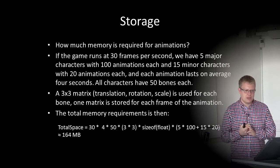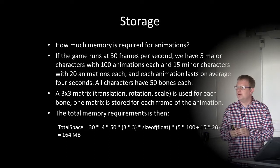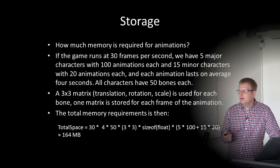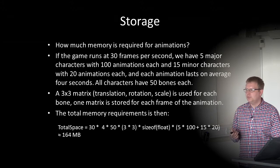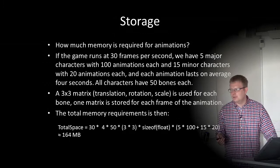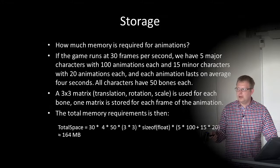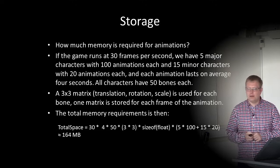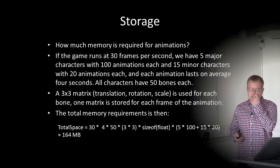How much memory is required for animations? If a game runs at 30 frames per second with 5 major characters having 100 animations each, 50 minor characters with 20 animations each, each animation lasting 4 seconds on average, all characters having 50 bones, and a 3×3 matrix stored per bone per frame using float values — the total memory requirement would be approximately 164 megabytes. That's quite a lot of memory, and sometimes we simply don't have that much available, so we need to compress it.